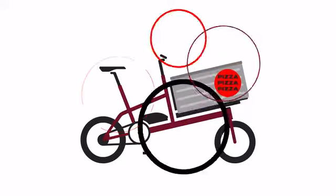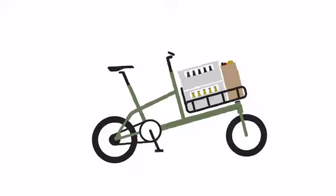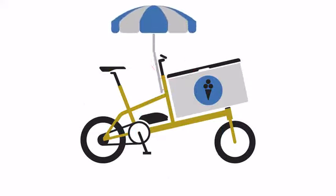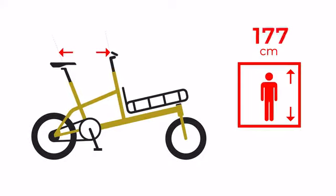UNIT offers a very flexible transport system. One bike, a million transport options. By the way, one size fits all. The UNIT cargo bike can be easily adjusted to your height.